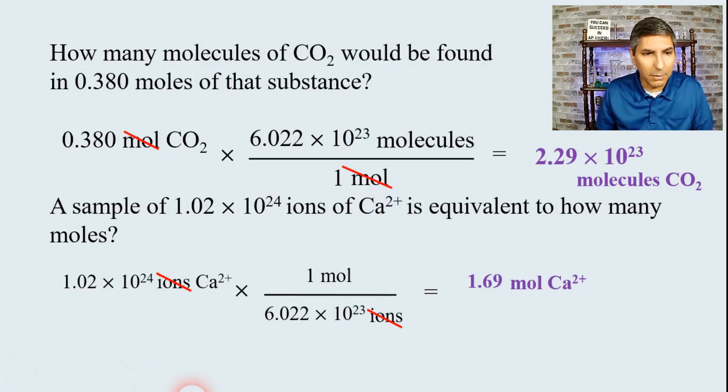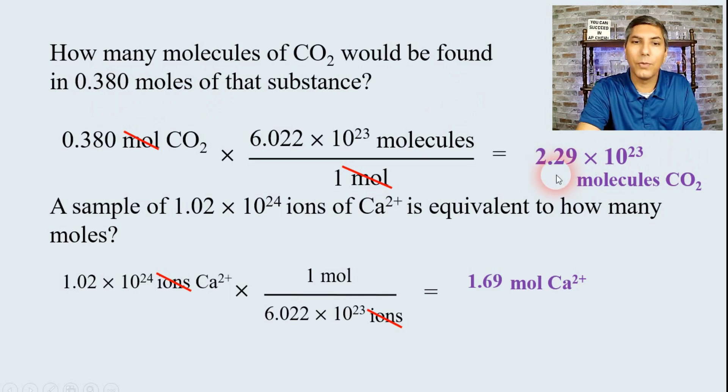Now, just a little point that I want you to realize. I'm trying to be consistent on my significant figures here. So, for example, in the question up here in the first example, I had three significant figures. So in the answer, notice I have an answer with three significant figures. Likewise, in the second example, I had three significant figures in the question. So I put three significant figures in my answer. So I try to be consistent with significant figures as much as I can.